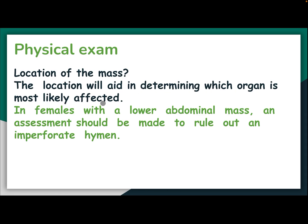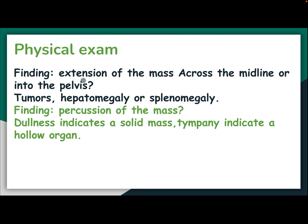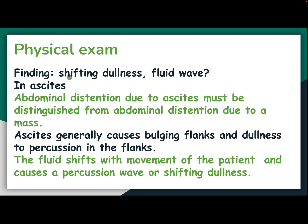The location of the mass aids in determining which organ is most likely affected. In females with a lower abdominal mass, an assessment should be made to rule out an imperforate hymen. Extension of the mass across the midline or into the pelvis may suggest a tumor, hepatomegaly, or splenomegaly. On percussion, dullness indicates a solid mass, while tympani indicates a hollow organ.